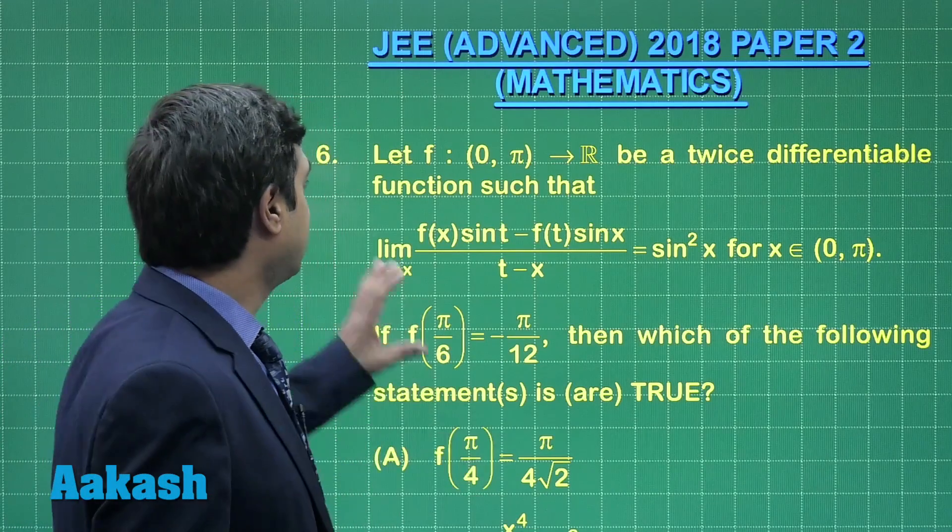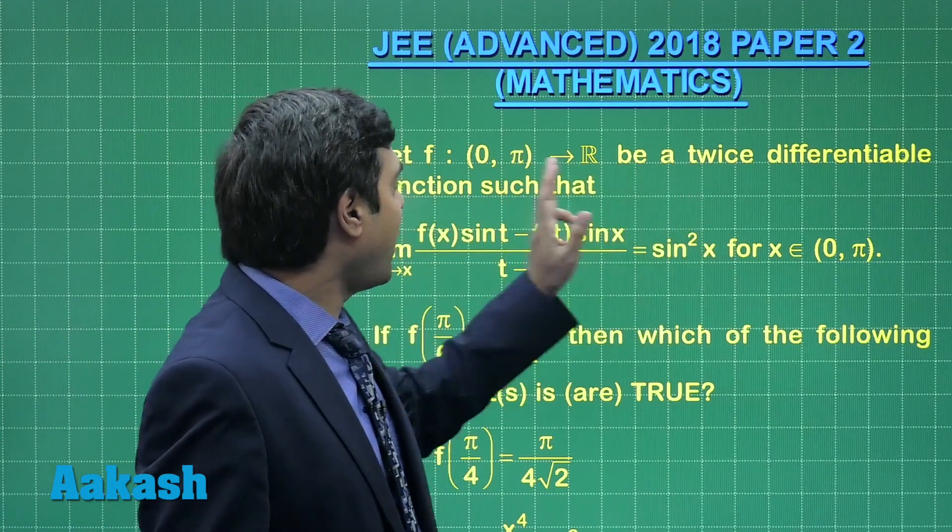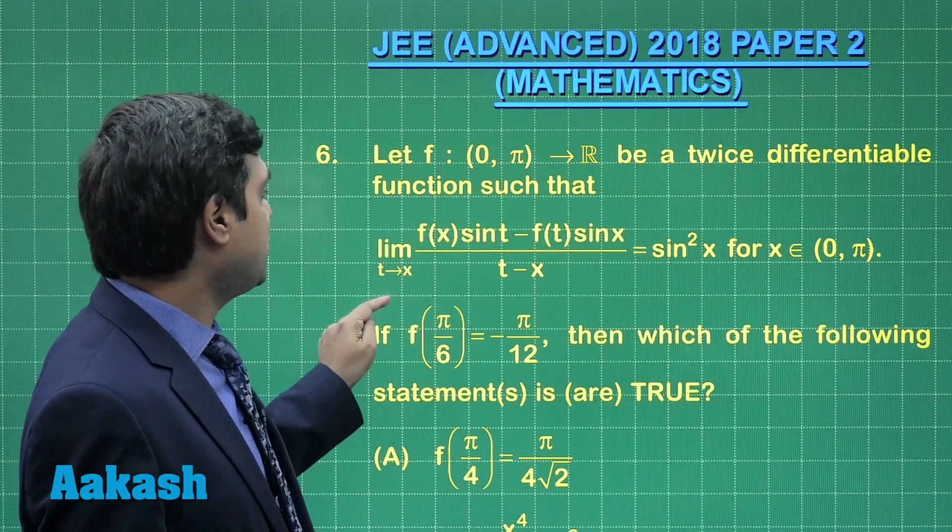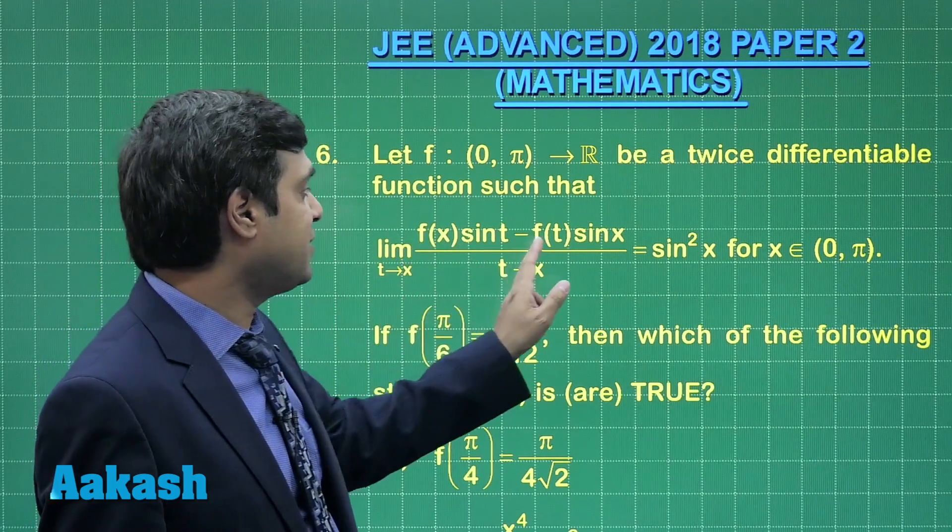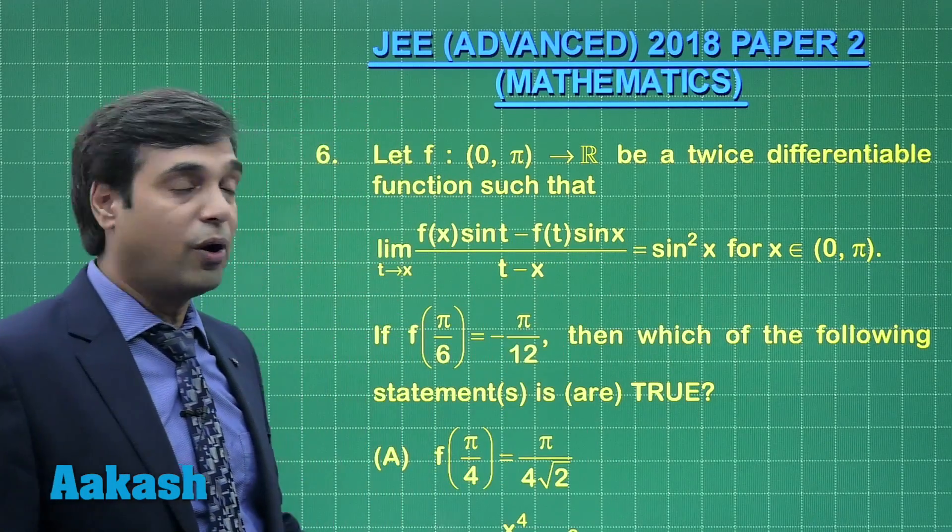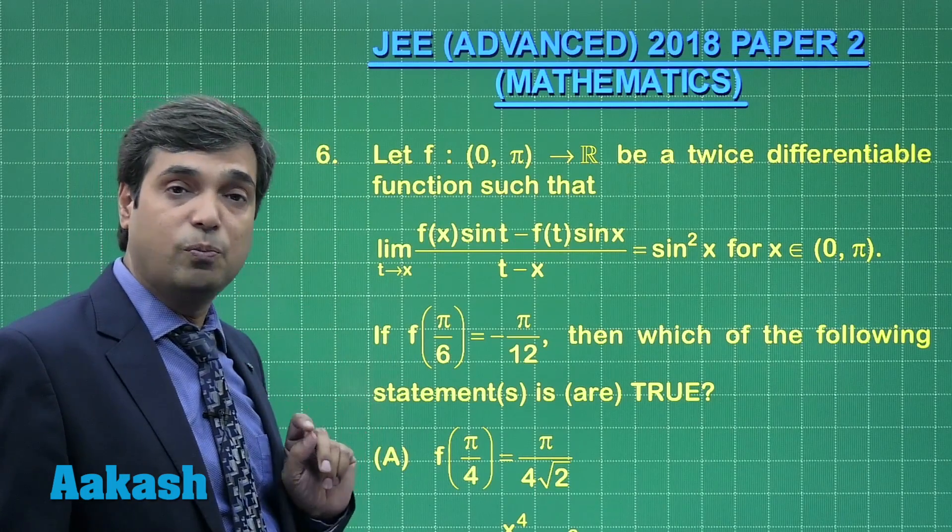Let us consider question number 6. Let f be a twice differentiable function such that the limit as t approaches x of [f(x)sin t - f(t)sin x] / (t - x) equals sin²x for x in the interval (0, π).